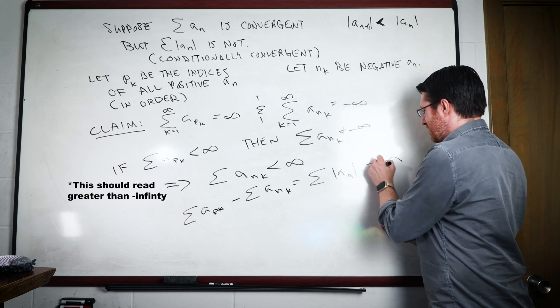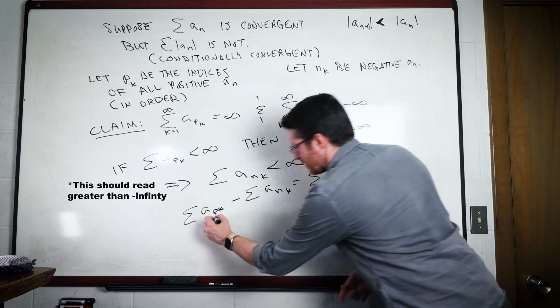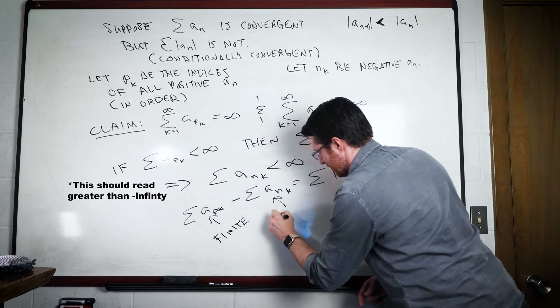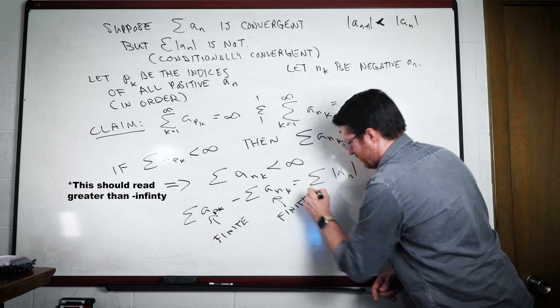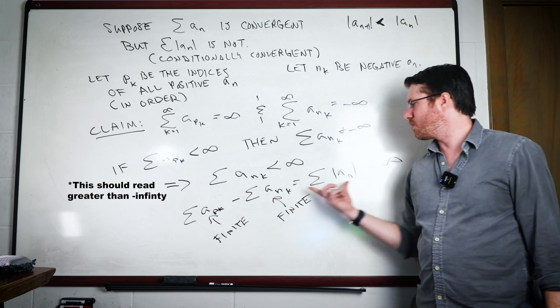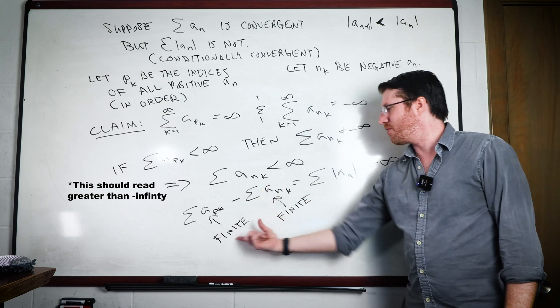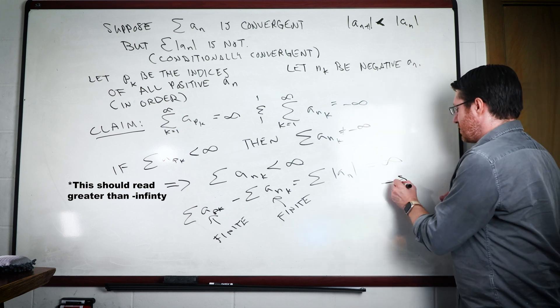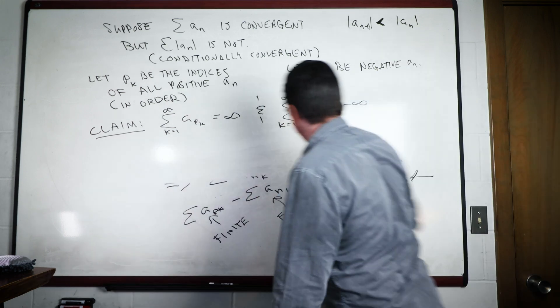But we know that this is infinity. But this is finite, and this is finite. And so therefore, that would make this an absolutely convergent series if this ended up being finite plus finite. And we know that this is actually infinity. And so this is a contradiction. Therefore, we have this claim.